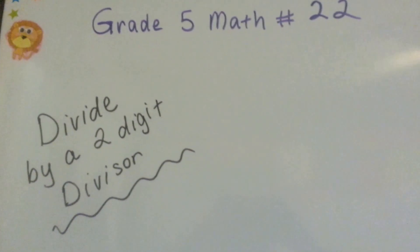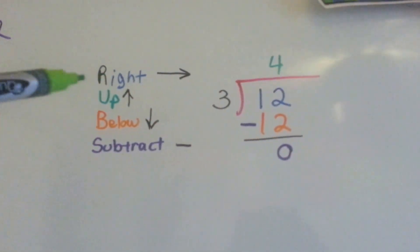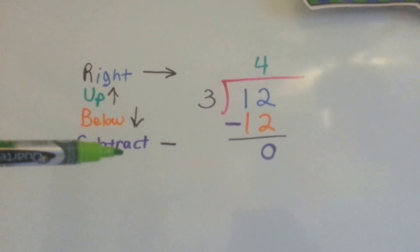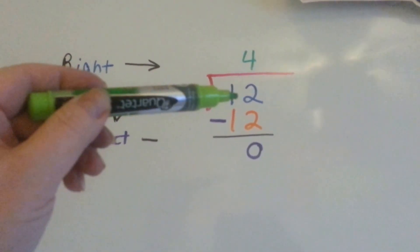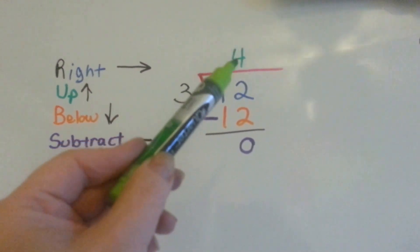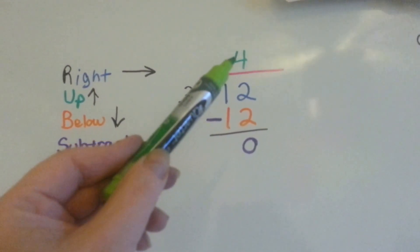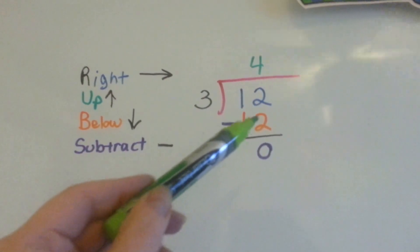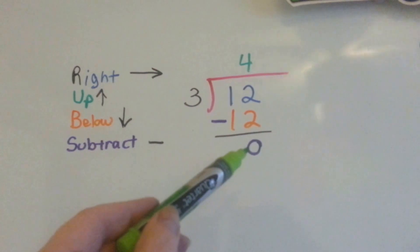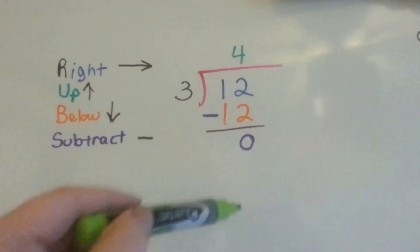We're going to do long division with a two-digit divisor. Just so you remember, when we divide, we go right, up, below, subtract. So we go right — the 3 would go into the 12 — then we go up and write how many times it went into the 12, above the 12. Then we go below and write what the multiplication was, 3 times 4 below there, and then we subtract. It's like RUBS: right, up, below, subtract.